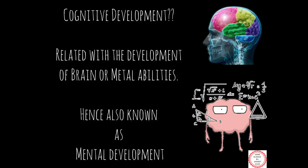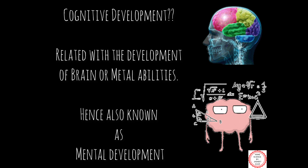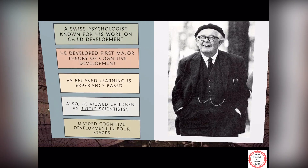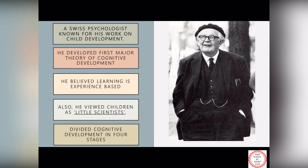Before beginning, let's understand the meaning of cognition or cognitive development. It means development of the brain — you can also call it the development of mental abilities. Beginning with the introduction of Jean Piaget, he was a Swiss psychologist who was born in August 1896.